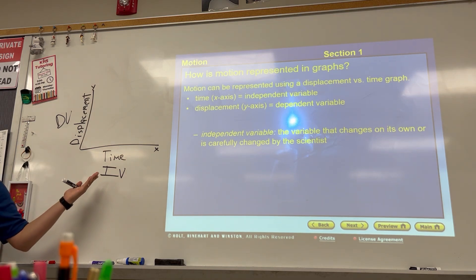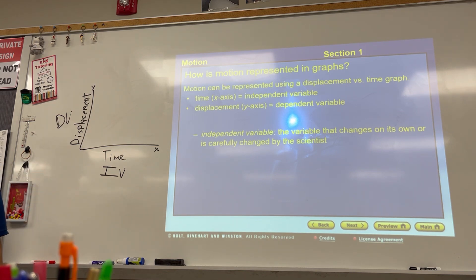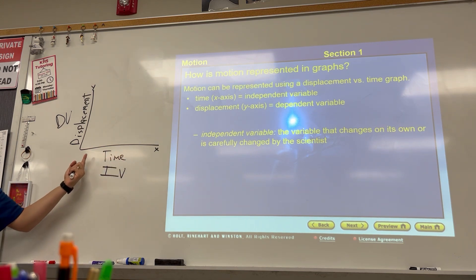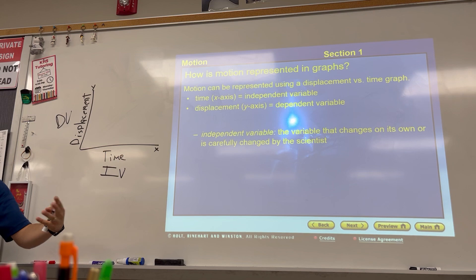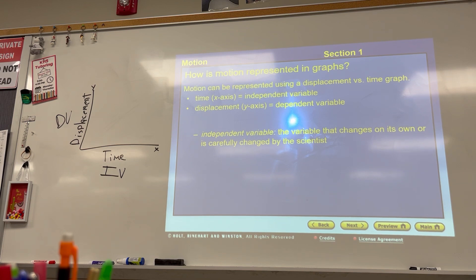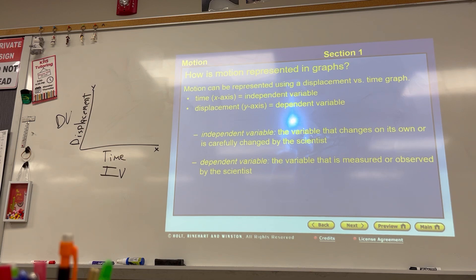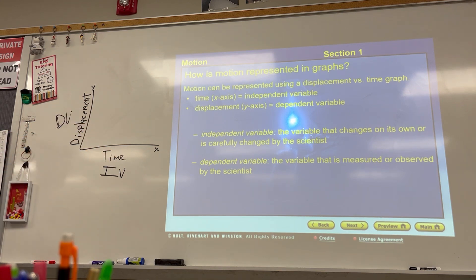In this context, obviously, time changes on its own — I don't have to turn a crank to make time move. But in other experiments, the variable on the x-axis could be something else that I am intentionally changing. The dependent variable also changes, but I don't change it myself — I measure it. So the dependent variable is the thing that we are observing or measuring as it changes related to the independent variable.